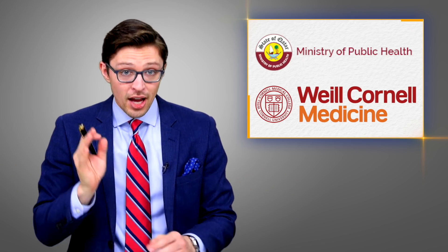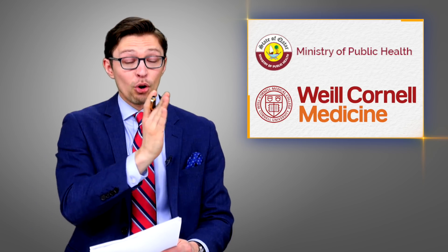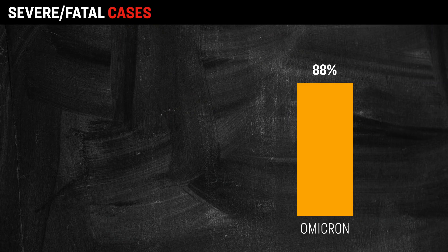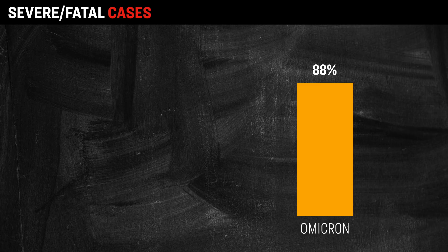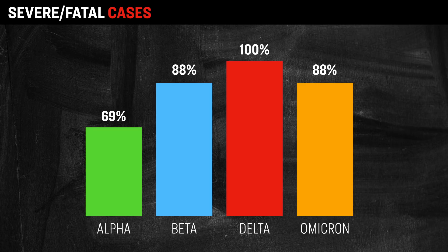What they found was that in regards to severe, critical, or even fatal COVID cases, here's how the level of protection broke down by variant for people who were naturally immune: In cases caused by Omicron, naturally immune people had approximately 88% protection against severe or fatal cases. For the Delta variant, naturally immune people had 100% protection against severe or fatal cases. For the previous Beta variant, the protection was also around 88%, and for the initial Alpha variant, the protection was around 69%.